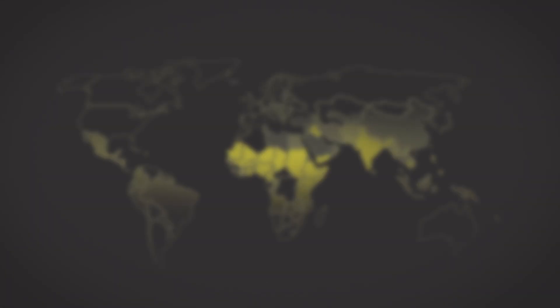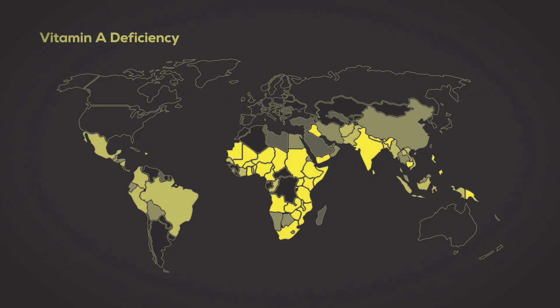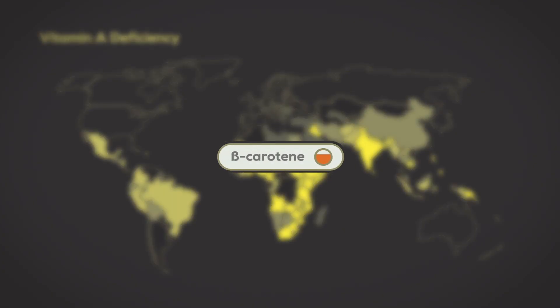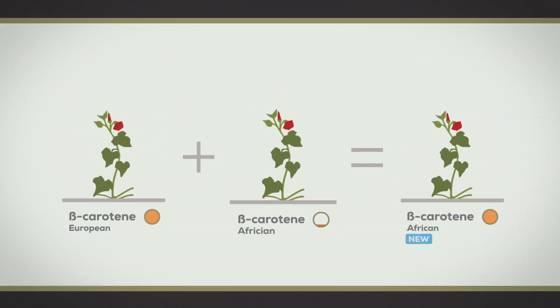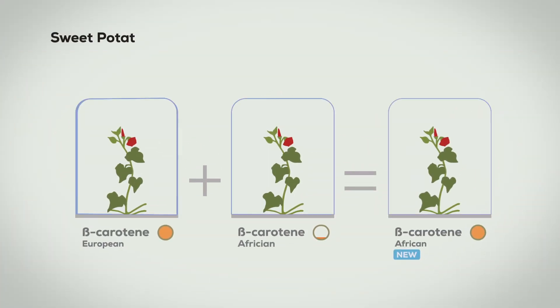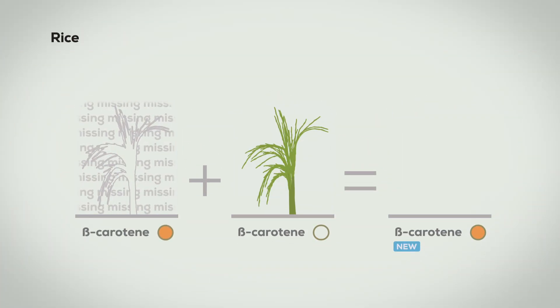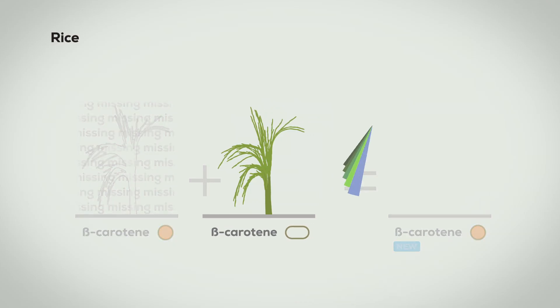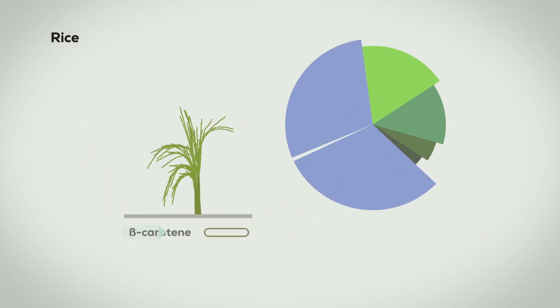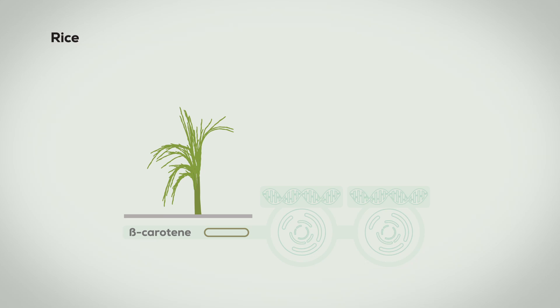In many places today the poor are suffering from vitamin A deficiency due to a lack of beta-carotene in their diets. Some crops can be hybridized to produce beta-carotene however rice unfortunately isn't one of them. Rice is a staple food for much of the world but is missing two of the proteins needed to make beta-carotene.